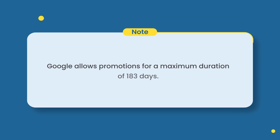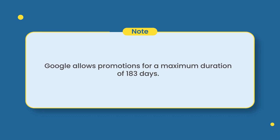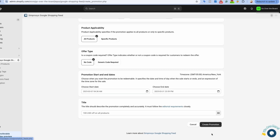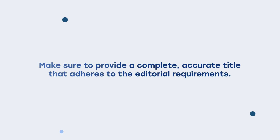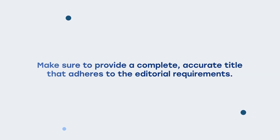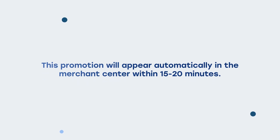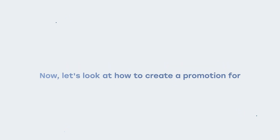Please note that Google allows promotions for a maximum duration of 183 days. Lastly, enter a suitable promotion title and click on Create Promotion. You can find the editorial requirements here — the link is also available in the description. Make sure to provide a complete, accurate title that adheres to the editorial requirements. You can see the promotion status is active, and this promotion will appear automatically in the Merchant Center within 15 to 20 minutes.